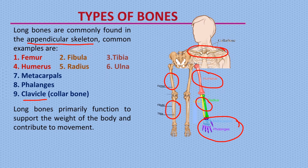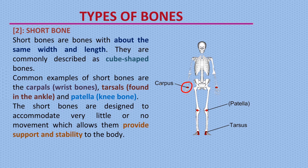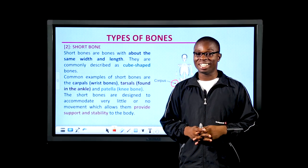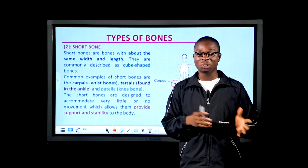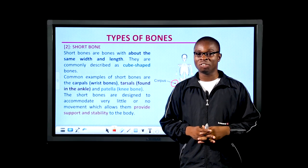Short bones are bones with about the same length and width — they are commonly described as cube-shaped bones. Common examples include the carpals (wrist bones), the patella (kneecap), and the tarsals found in the ankle. Because of their design, short bones accommodate very little or no movement; for this reason, they contribute to the support and stability of the body.